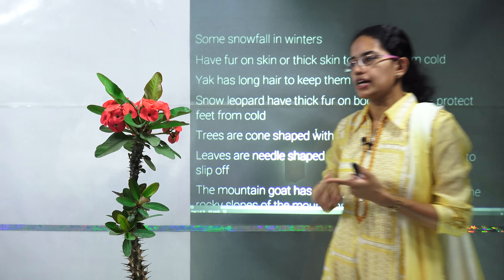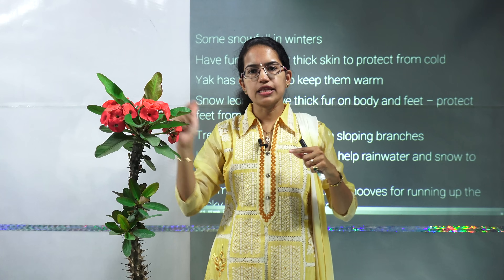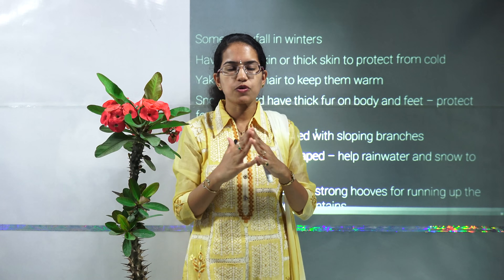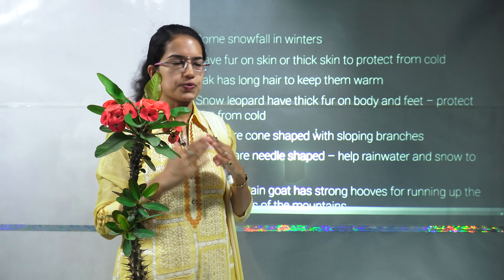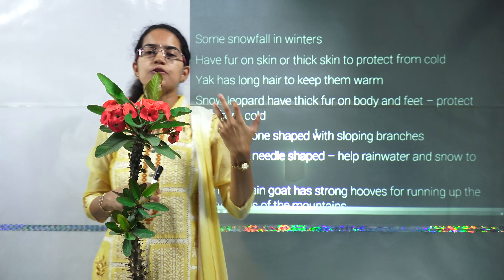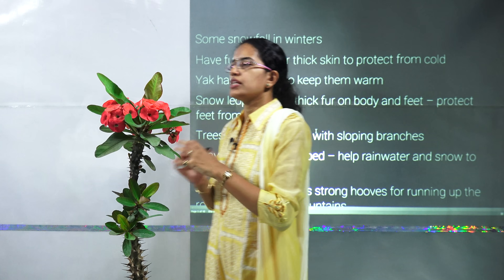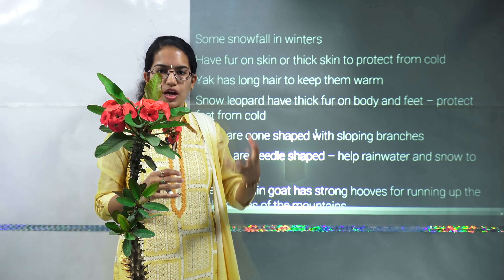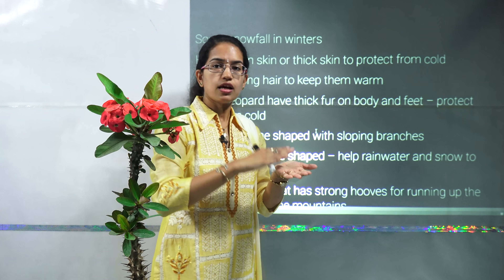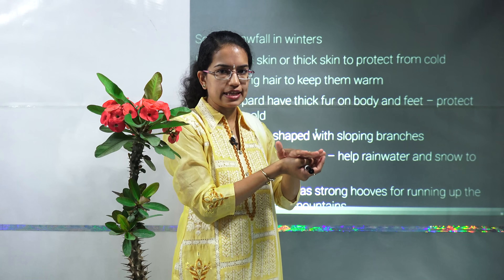Mountain areas have adaptations for trees: conical trees prevent snow runoff, and leaves are very thin and spiky so they move along with wind direction and are not damaged by heavy wind at high altitudes. Animals, especially in polar areas, are white in color to camouflage with the snow. They have thick fur to protect from cold waves, and their feet also have a good layer of fur to protect from cold absorbed from the ground surface.